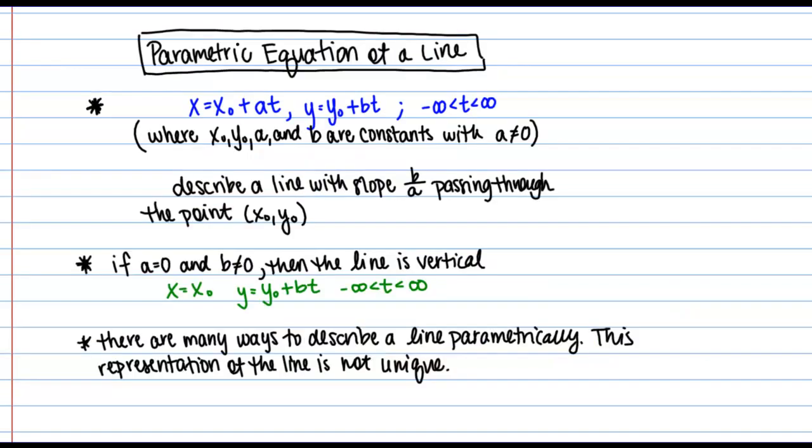Let's summarize with a few notes about the parametric equation of a line. The parametric equations X equals X₀ plus AT and Y equals Y₀ plus BT, for T between negative infinity and infinity, trace out a line, where X₀, Y₀, A, and B are constants with A not equal to zero. Specifically, it's a line with slope B over A passing through the point (X₀, Y₀).